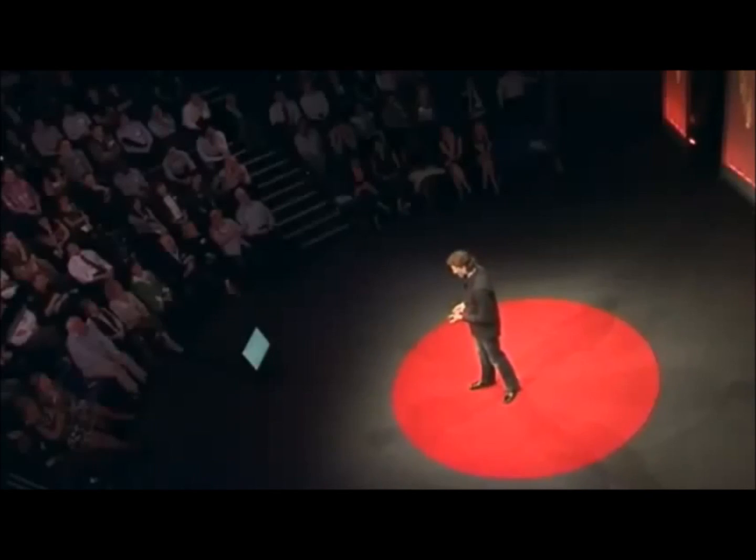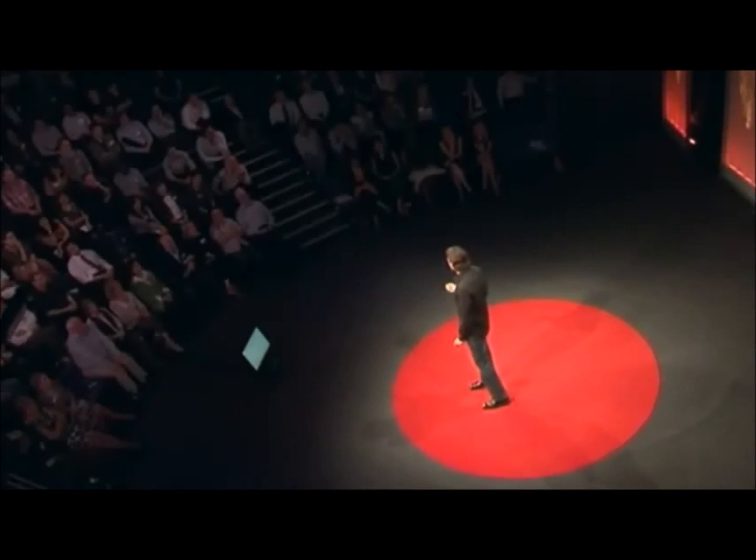How do we do this? We use a model system that we term a protocell — think of it as a kind of primitive cell. It is a simple chemical model of a living cell. Consider that a cell in your body may have on the order of millions of different types of molecules.